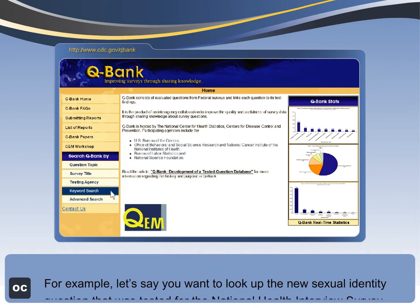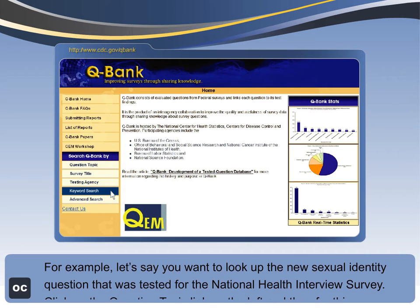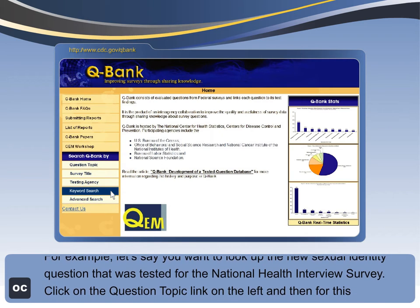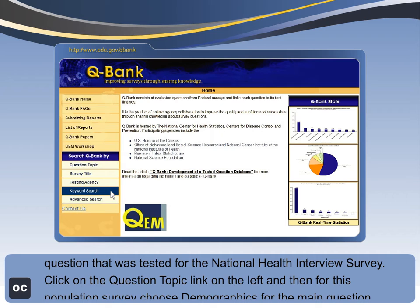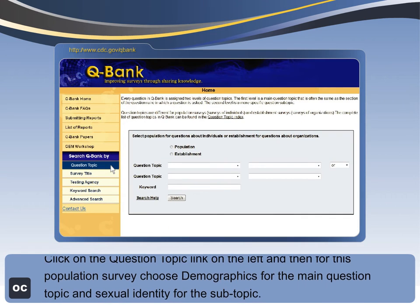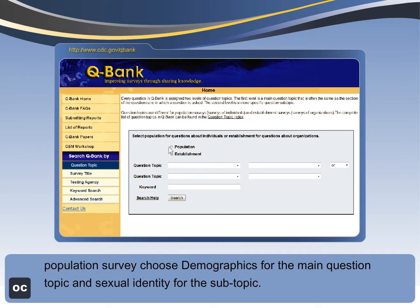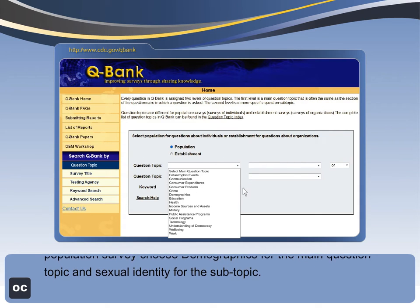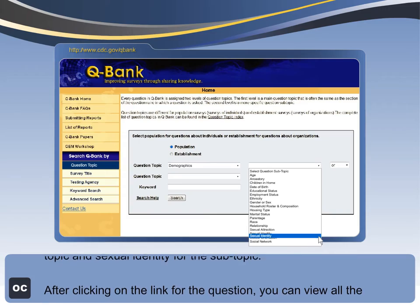For example, let's say you want to look up the new sexual identity question that was tested for the National Interview Survey. Click on the question topic link on the left, and then for this population survey, choose demographics for the main question topic and sexual identity for the subtopic.